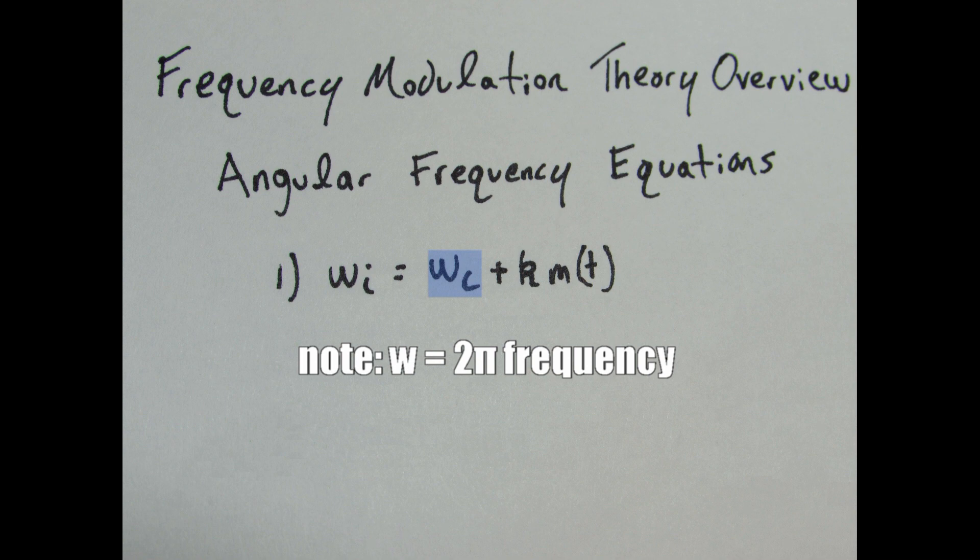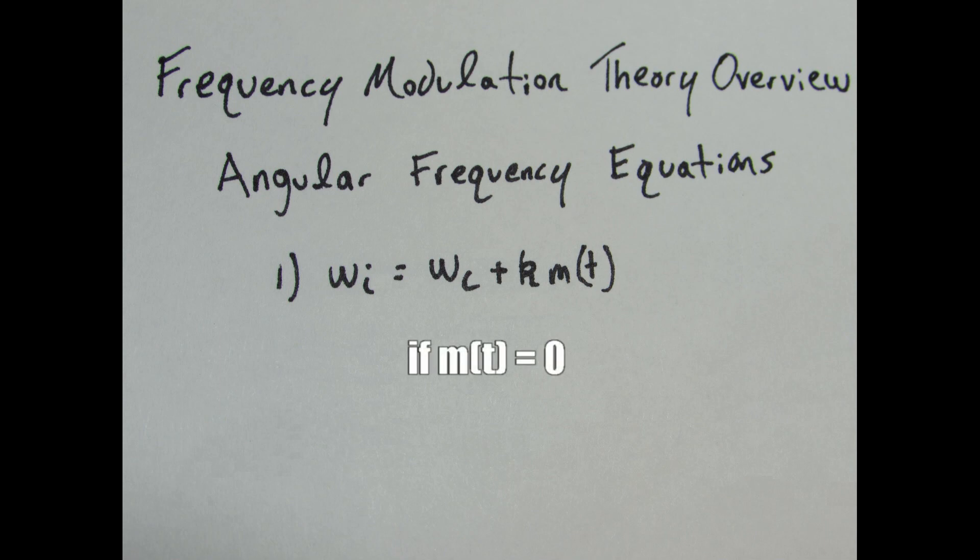is easy to understand if for a moment we assume that the message signal is zero. If the message signal is zero, then we have zero times the voltage to frequency conversion, k. In this instance, the instantaneous angular frequency, or output frequency, is equal to the angular frequency carry, omega c.